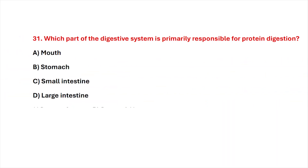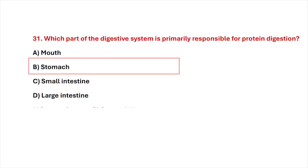Question 31. Which part of the digestive system is primarily responsible for protein digestion? Correct answer is option B, stomach.